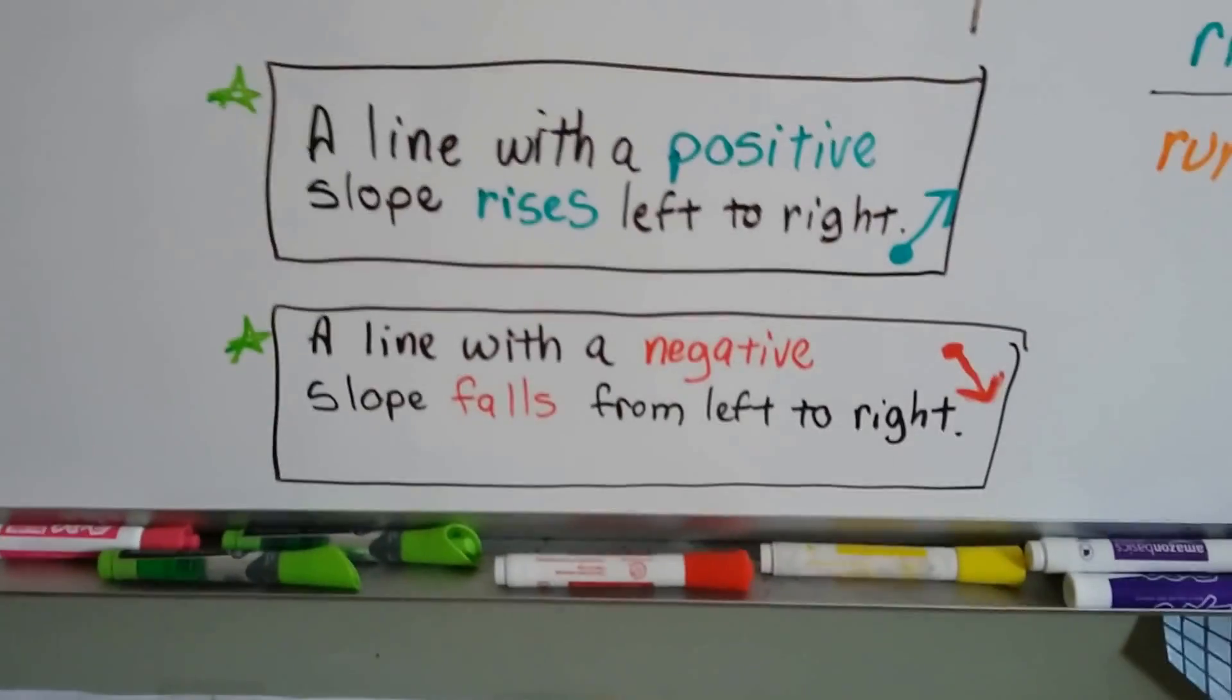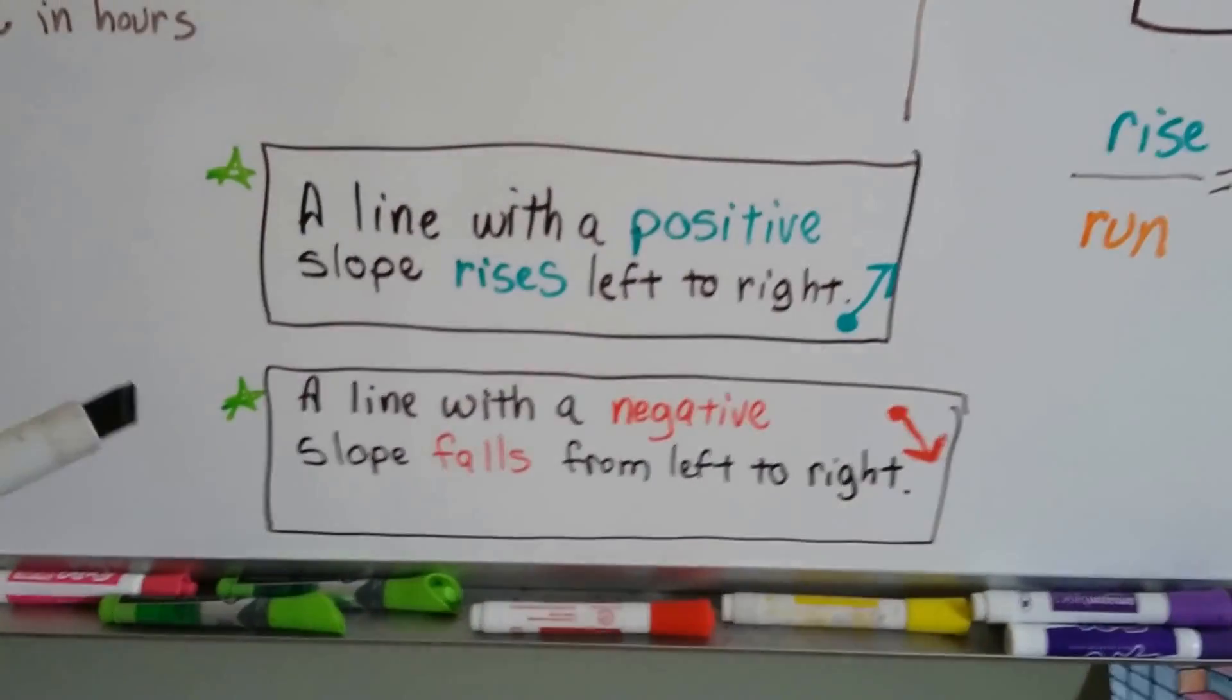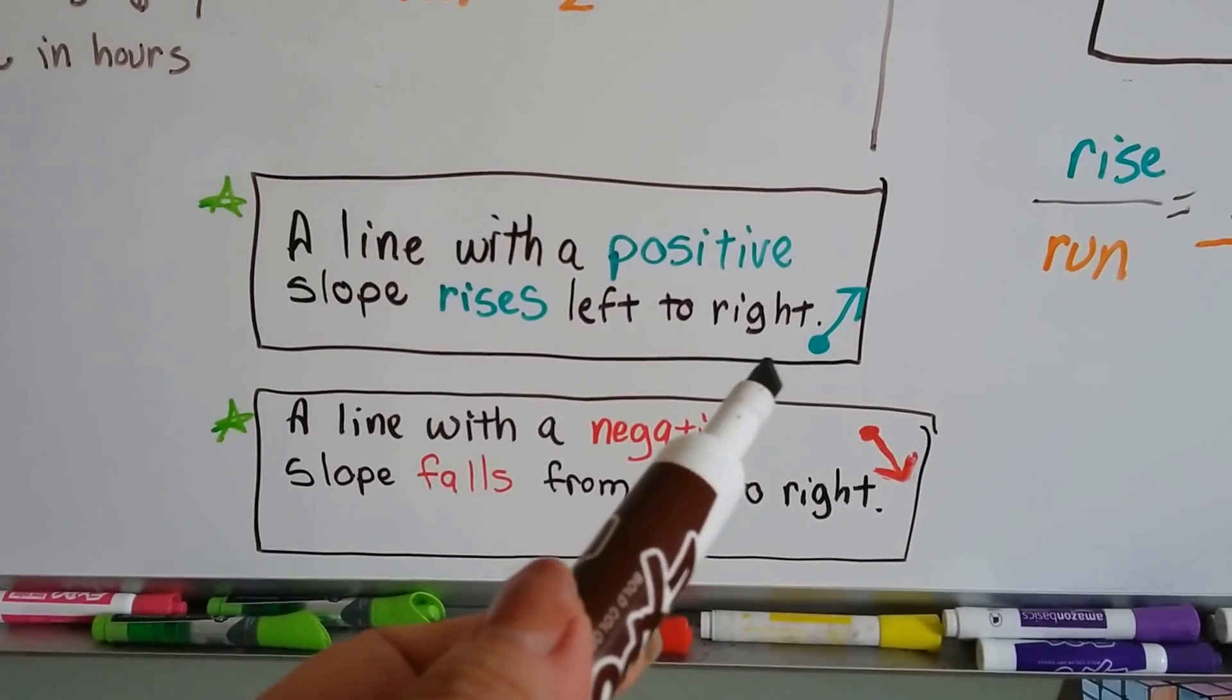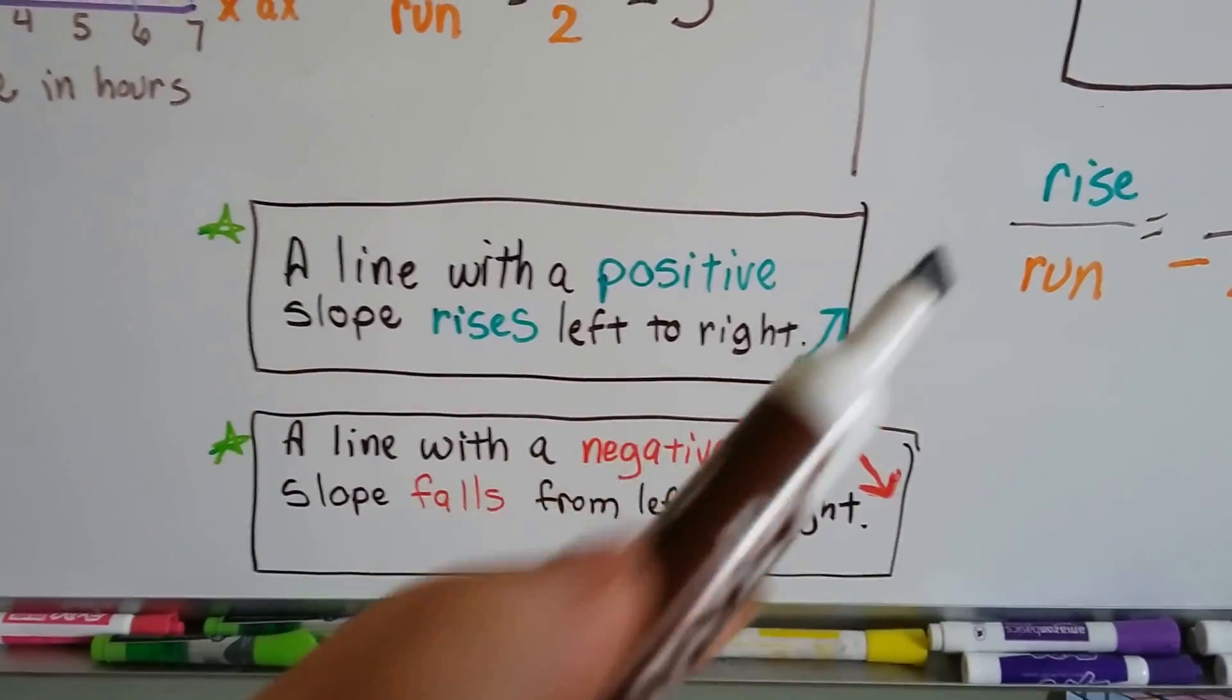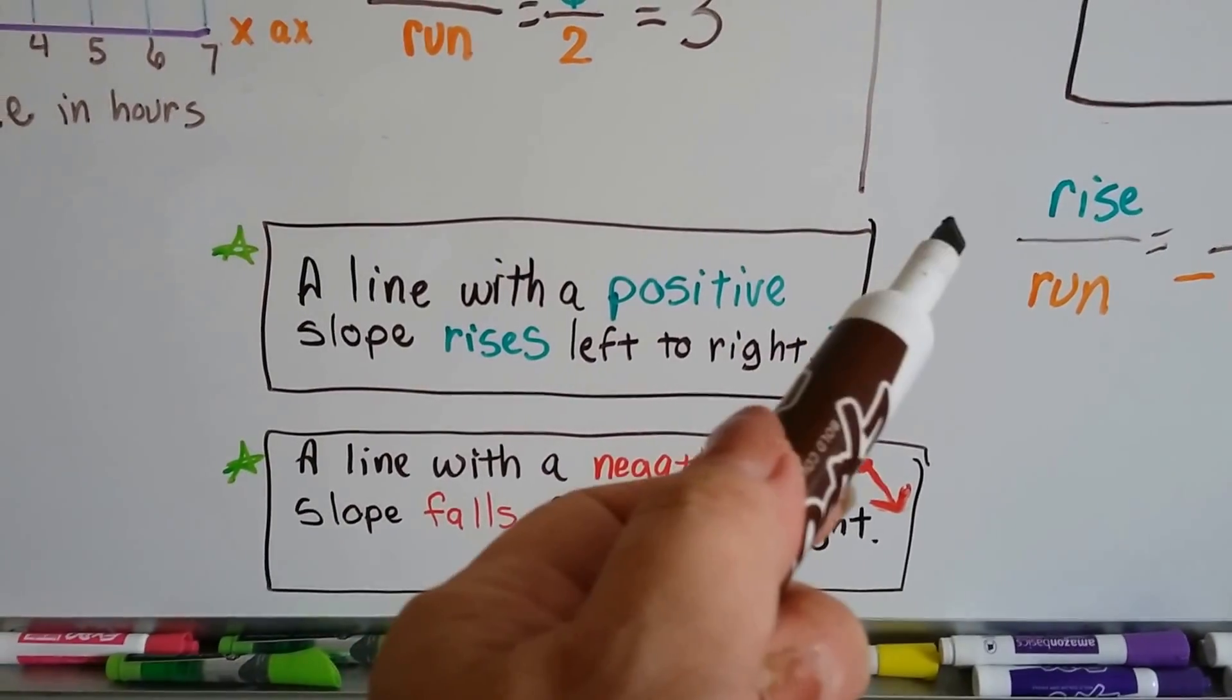So there's a little thing that people in algebra use to remember it. A line with a positive slope rises from left to right. From left to right, it's rising going this way.